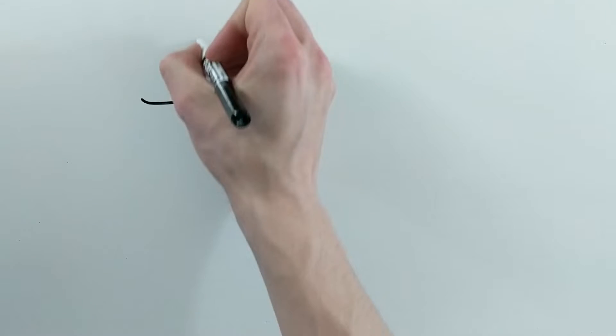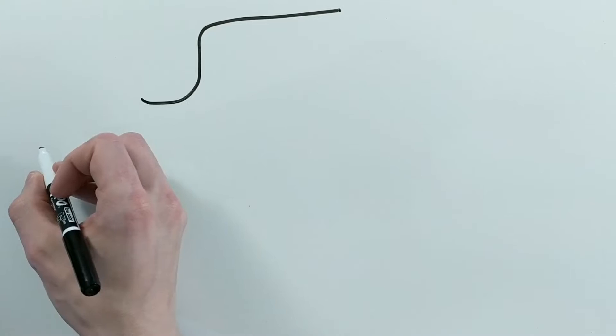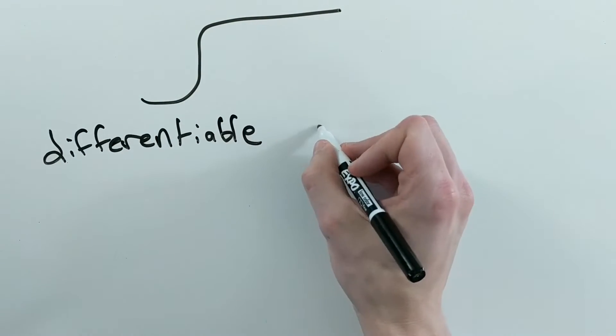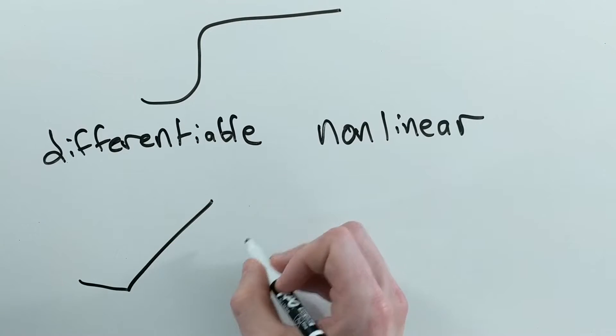In the intro, I said that most activation functions looked like this. In reality, activation functions usually only need two properties: they are differentiable and non-linear. This means they can have all sorts of shapes.